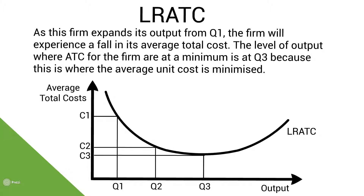Moving from Q1 towards Q3 is known as economies of scale, because the firm is reducing its average total cost when it is producing more goods and services. When a firm increases its output beyond Q3, we say that the firm is experiencing diseconomies of scale, because the average total cost is rising as the firm produces more goods and services.